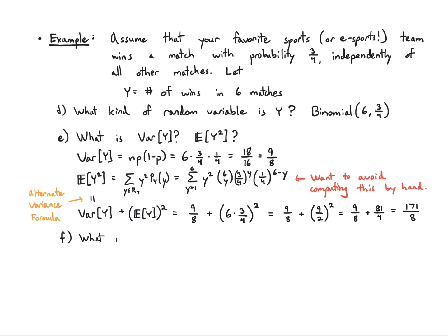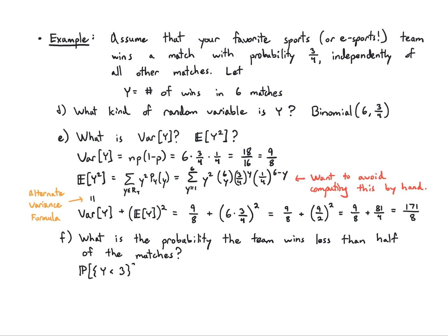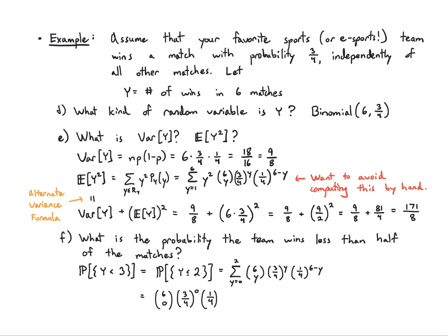Finally, what is the probability that your team wins less than half the matches out of six? That means P(Y < 3) = P(Y ≤ 2). Summing over y = 0, 1, 2: C(6,0)*(3/4)^0*(1/4)^6 + C(6,1)*(3/4)^1*(1/4)^5 + C(6,2)*(3/4)^2*(1/4)^4 = 154/4096.